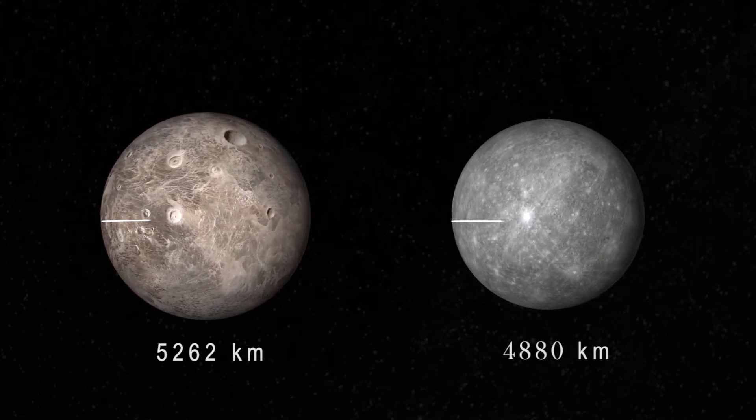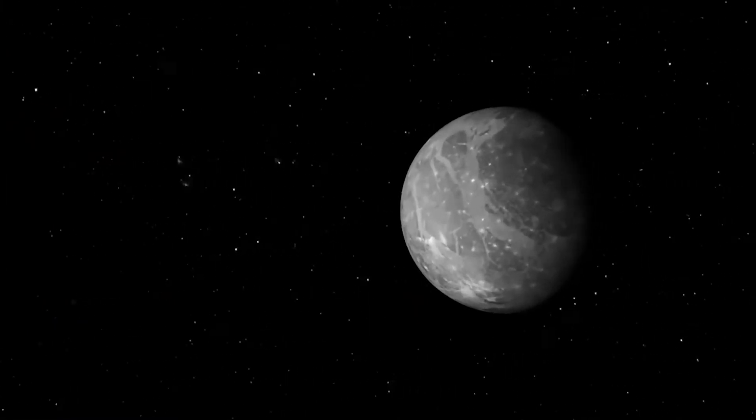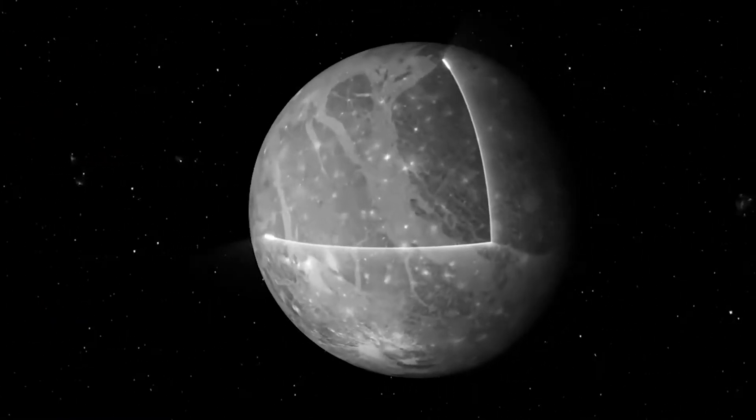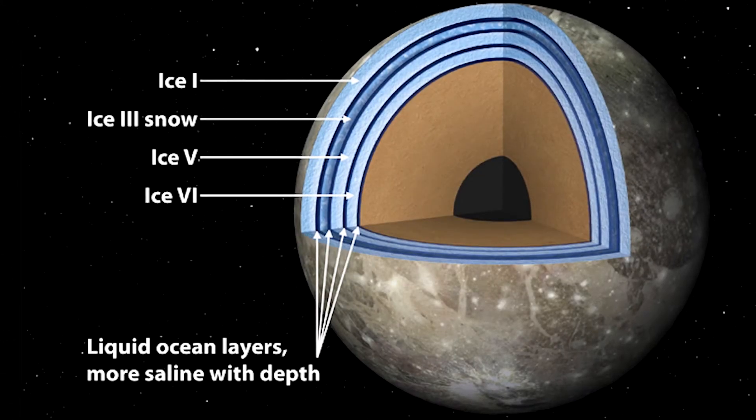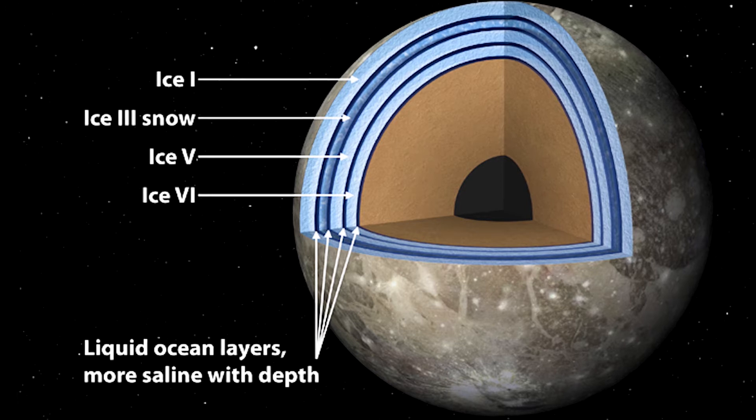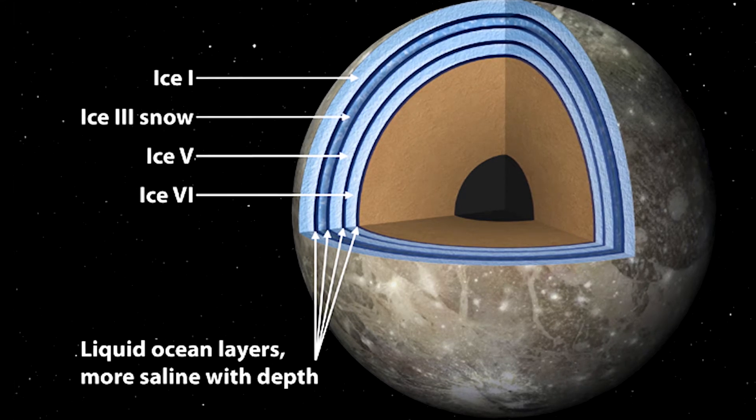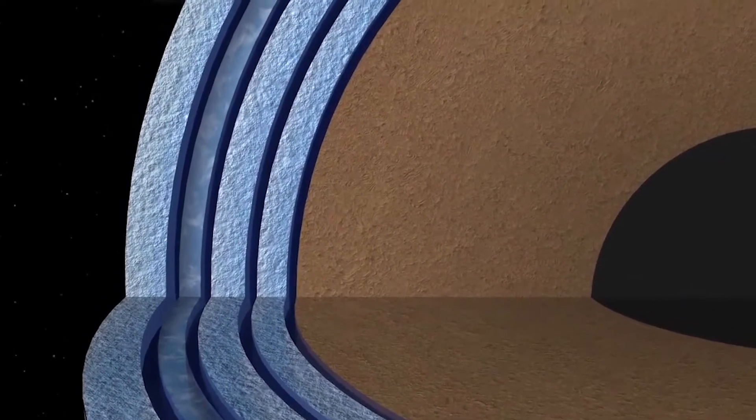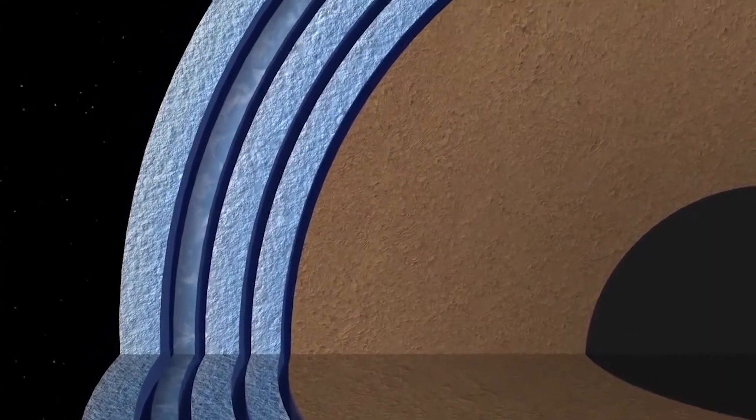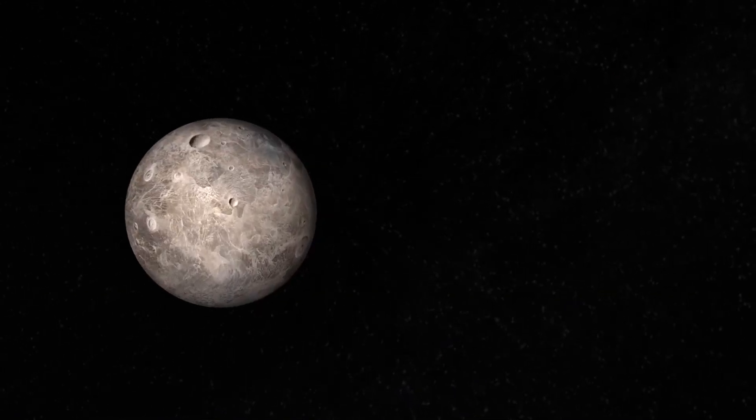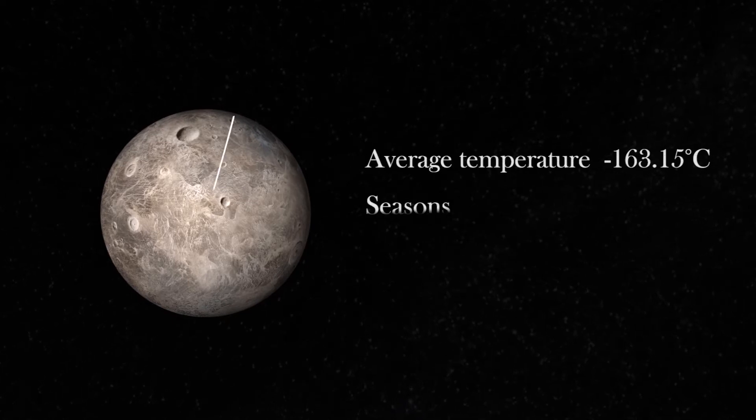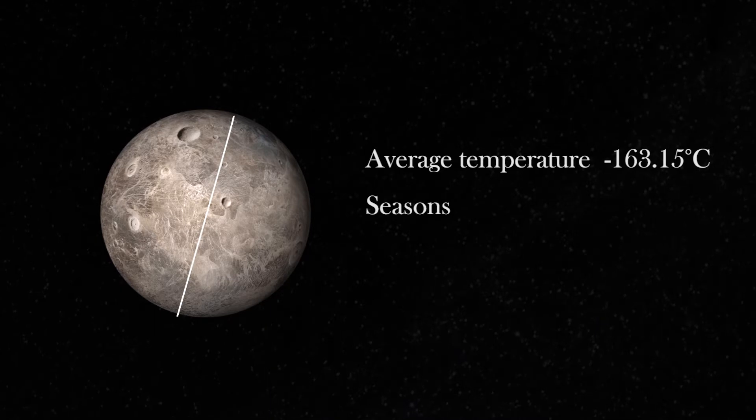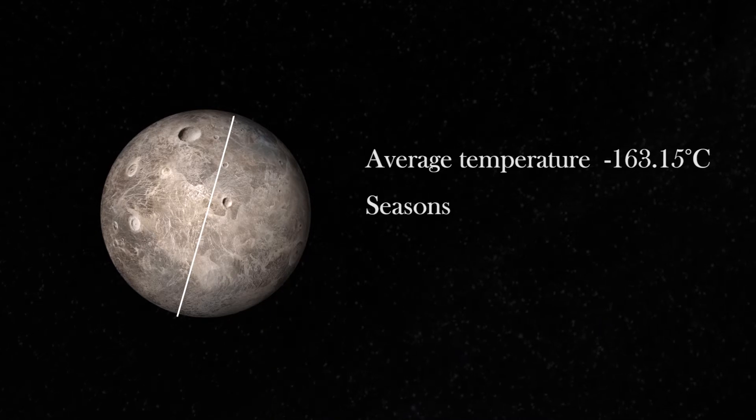Ganymede is made of rock and ice. It also has a subsurface liquid ocean hidden behind the thick ice crust. Research even suggests that Ganymede doesn't have one ocean, but multiple, stacked on top of each other, separated by different ice shells. The center is made of a liquid iron core that generates a magnetic field. The temperature on this planet is very cold, on average minus 163 degrees Celsius. Because its axis is tilted, however, Ganymede experiences seasonal changes, just like the Earth.